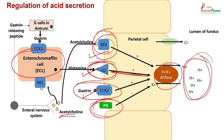Since the hydrogen-potassium pump is the ultimate source of acid secretion, blocking it at the proton pump level gives maximum efficacy compared to blocking at the H2 receptor level. Therefore, proton pump inhibitors are the strongest, longest-acting, and today the most popularly used drugs for peptic ulcer disease.